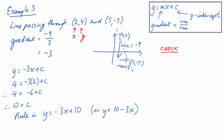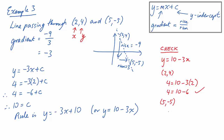Let's check our answer. We substitute in both points to see if they make the equation true. For (2, 4): 4 equals 10 minus 3 times 2, which becomes 4 equals 10 minus 6 — that's true, so (2, 4) is on the line. For (5, -5): negative 5 equals 10 minus 3 times 5, which becomes 10 minus 15, and negative 5 equals 10 minus 15 is true. So the point (5, -5) is also on the line y equals 10 minus 3x.